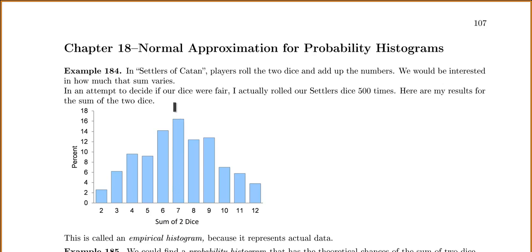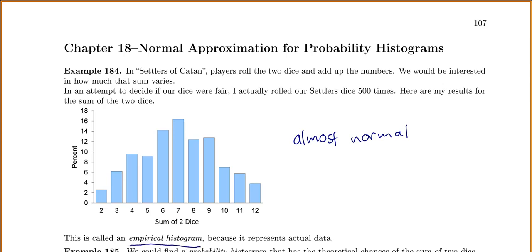To get a 7, I got a 7 about 16% of the time. I got a 6 about 14%, an 8 about 12%, etc. I only got a 2 about 3% of the time. Do you notice anything about the shape of these results? It does look almost normal. This is what we're going to call an empirical histogram because it represents our actual observed data — not what we think theoretically should happen, but our actual data from real life.